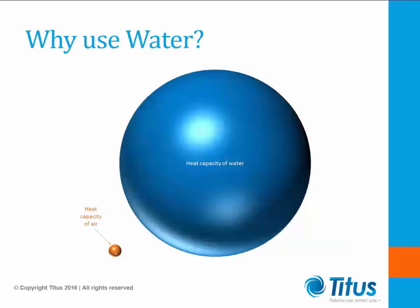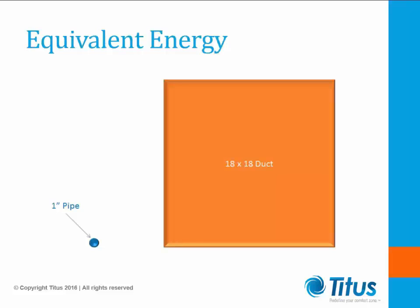Why use water? Water has 3,200 times the heat capacity of air. This is due to the higher density of water versus air, allowing a much higher heat capacity. Higher heat capacity allows for more efficient transfer of energy. The water either releases its energy through the water coil to the air during heating mode, or absorbs heat from the occupied space when in cooling. A 1-inch pipe can transfer the same amount of energy as an 18 by 18 air duct, requiring less space and less material to install, leading to lower costs.